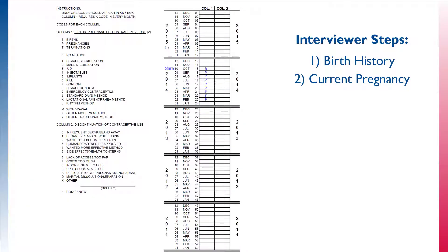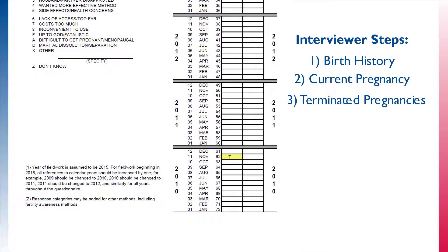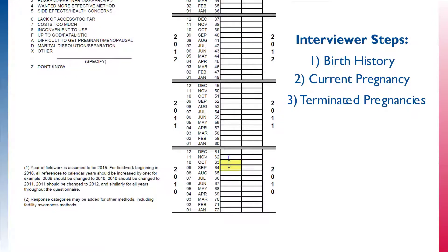The next step in filling out the calendar is to record any terminated pregnancies that occurred during the calendar period. This includes miscarriages, stillbirths, and abortions. In the same manner as before, the event is recorded with a code in column 1. This time a T is used. The months of pregnancy preceding the month of the event are also recorded.